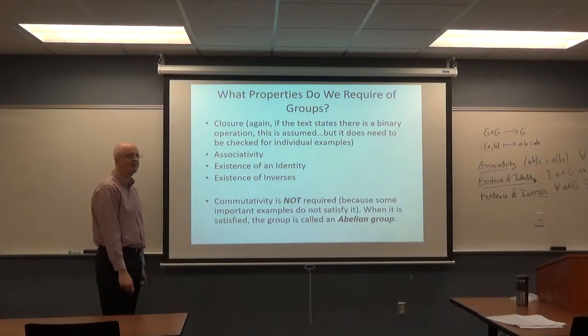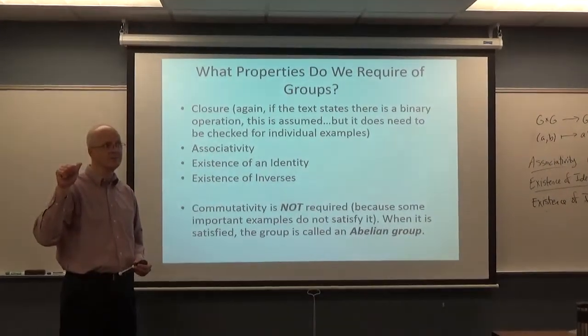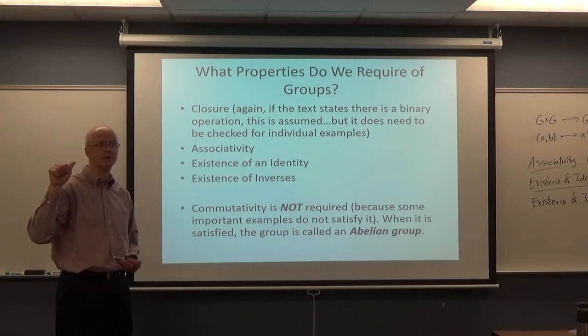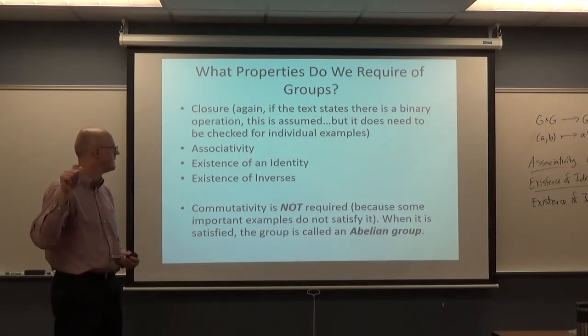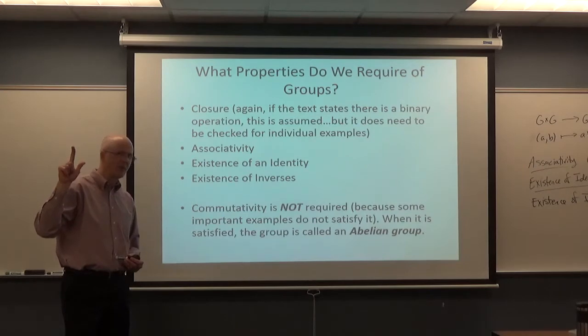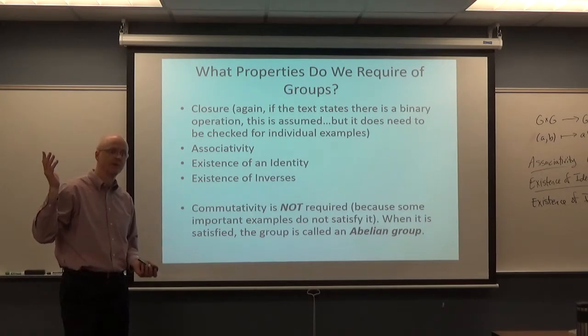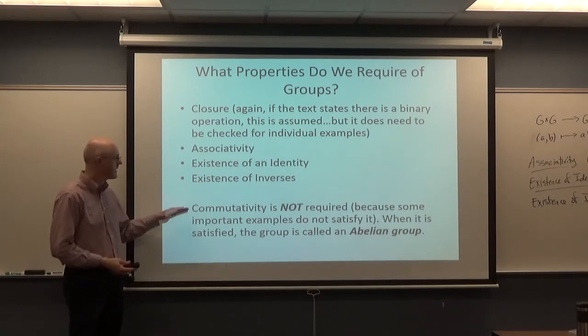Because there's lots of examples that are not commutative. Matrix multiplication. Examples where your elements are matrices, square matrices, and the group operation is multiplication. Those matrices have to have non-zero determinant as well to be in the general linear group. Function composition. We saw that example where the elements of the group were functions and the operation was function composition. Function composition in general is not commutative.